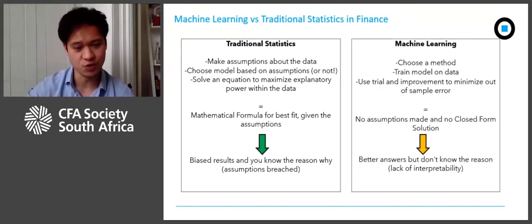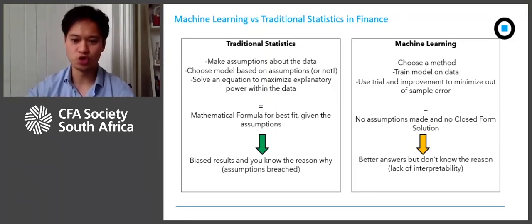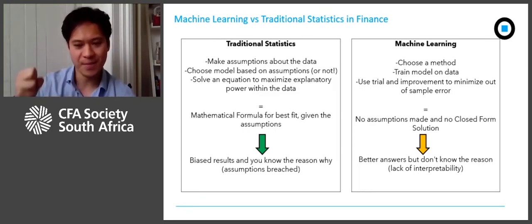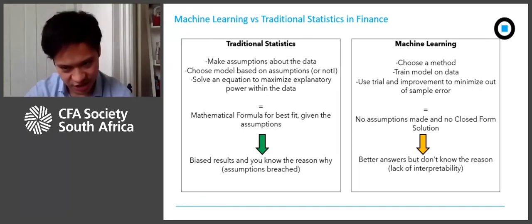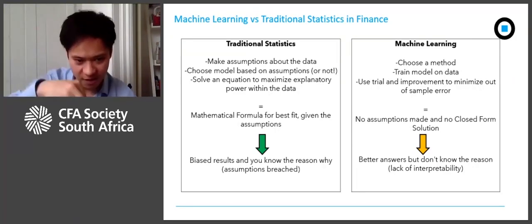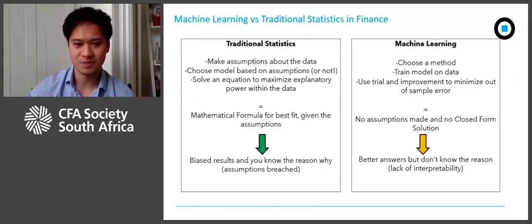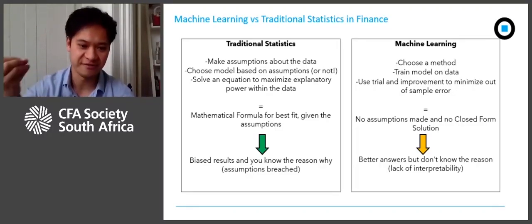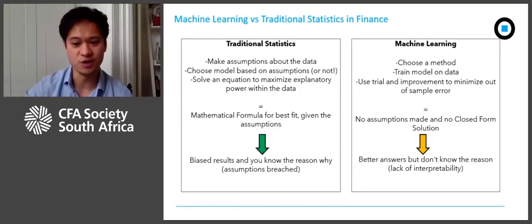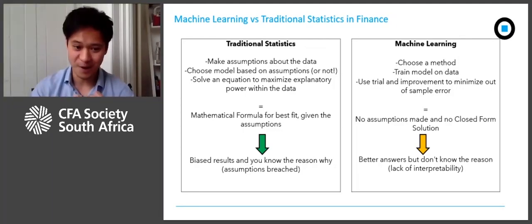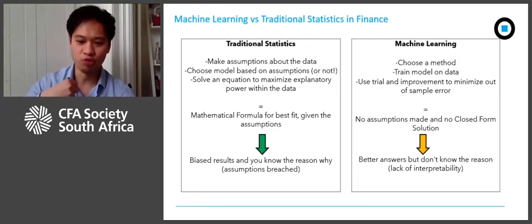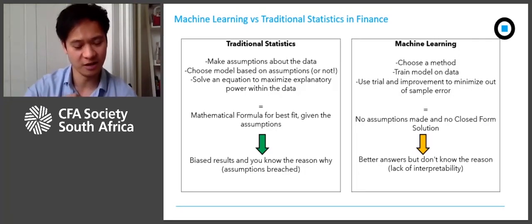With the machine learning approach, you choose a method, train a model on the data, and use trial and improvement to minimize the out-of-sample error — you're focused on prediction, on predicting outcomes outside of your dataset. You've made no assumptions, but you don't have a specific math formula you can use to explain how you got your results. Another way of saying it is that you end up with less biased answers, but the rules the machine learning algorithm is using to get those answers are not always clear.